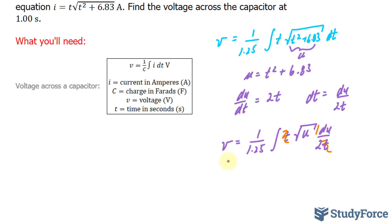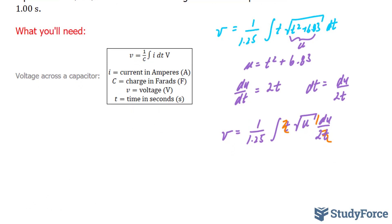This half can be pulled out of the integral to make the integration process easier, giving us v is equal to 1 over 1.25, that part hasn't changed, pulling out this half, times the integral of u to the power of half. I'm going to switch this from radical form to exponents with fractions, u to the power of half du.